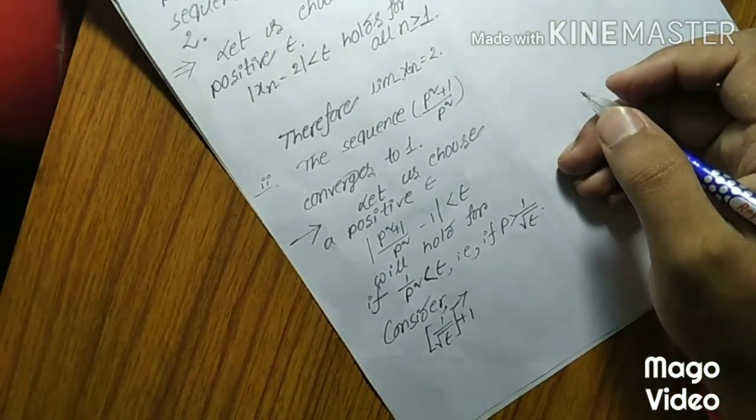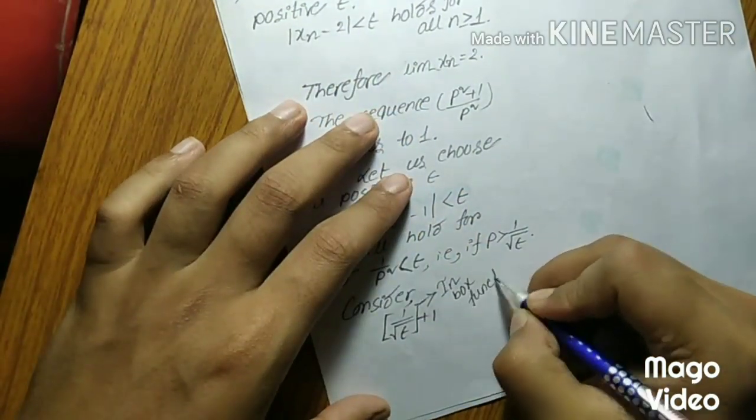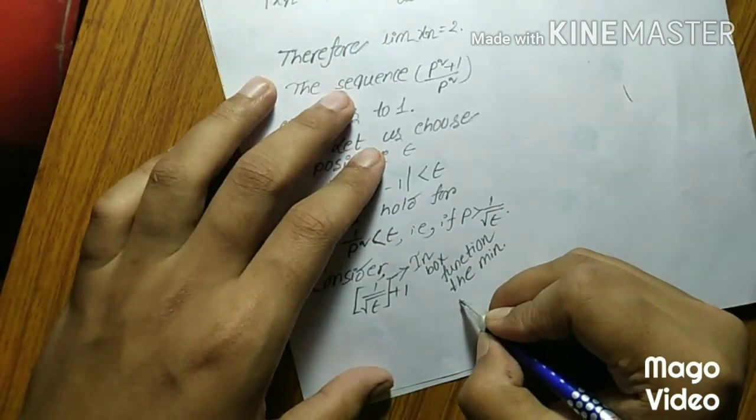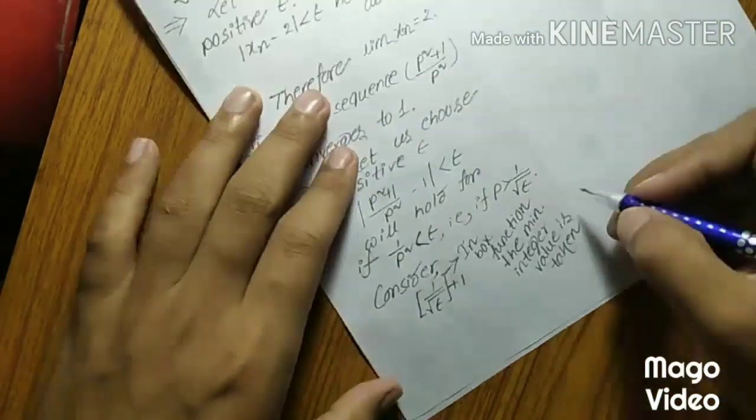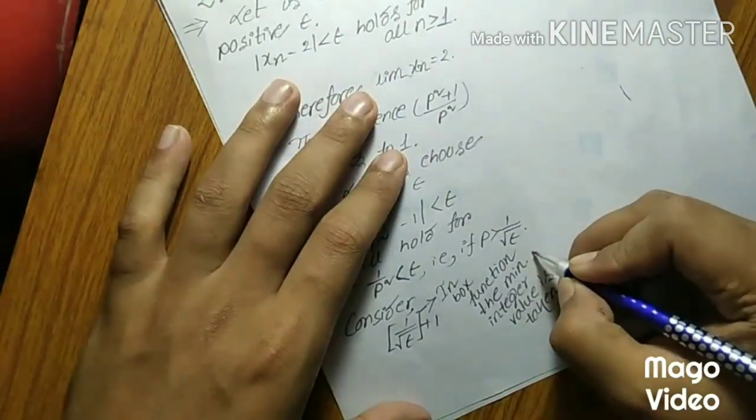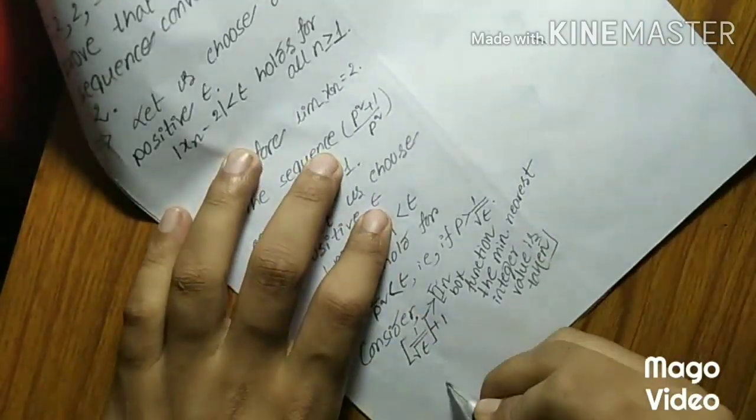Consider box of 1 by root epsilon plus 1. In box function, the minimum integer value is taken. Minimum nearest integer value.